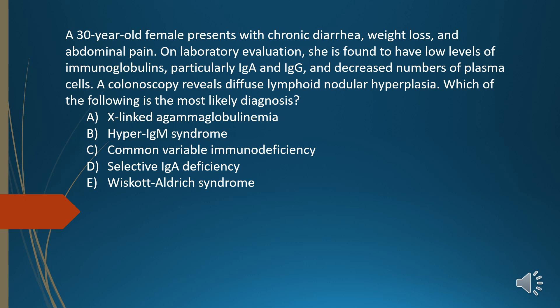A 30-year-old female presents with chronic diarrhea, weight loss, and abdominal pain. On laboratory evaluation, she is found to have low levels of immunoglobulins, particularly IgA and IgG, and decreased numbers of plasma cells. A colonoscopy reveals diffuse lymphoid nodular hyperplasia. Which of the following is the most likely diagnosis?